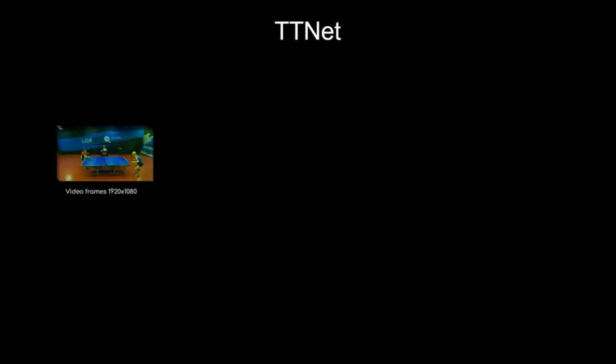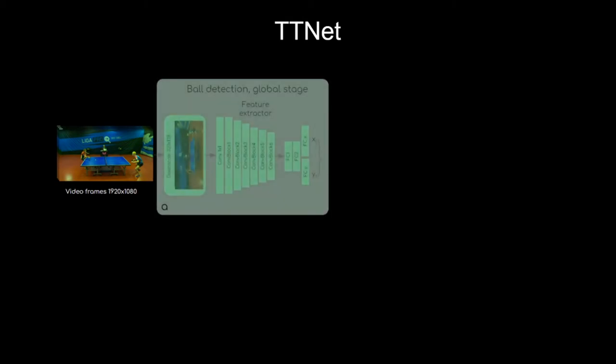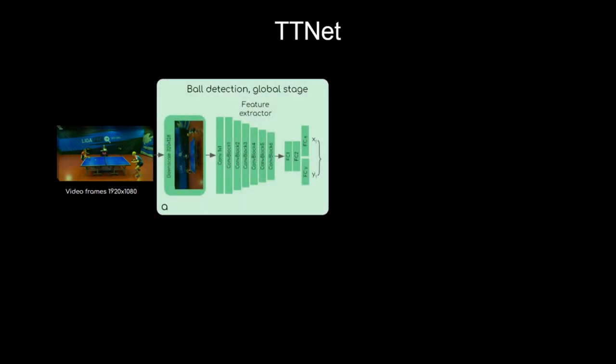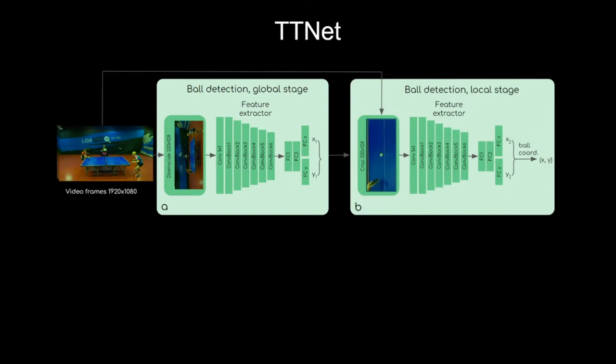The TTNet works in the following manner. The downscaled input is processed by the core backbone with a feature extractor, which outputs rough ball coordinates due to low resolution. Therefore, the second stage of ball detection is introduced.